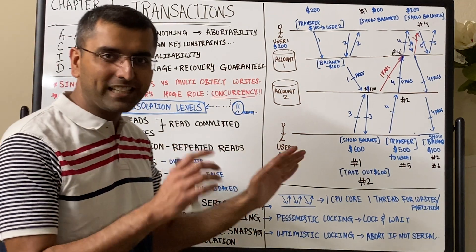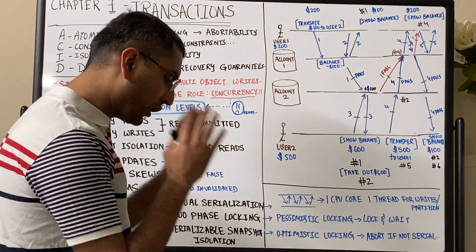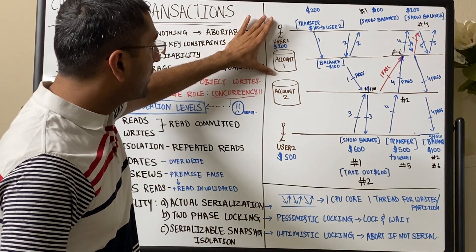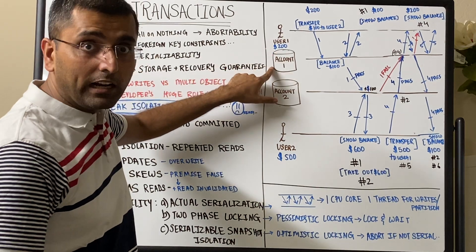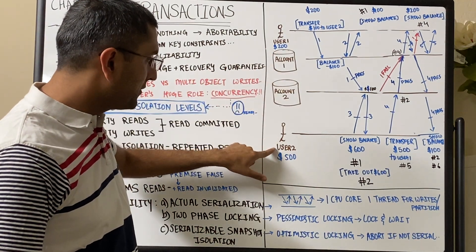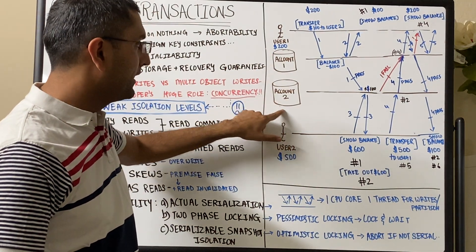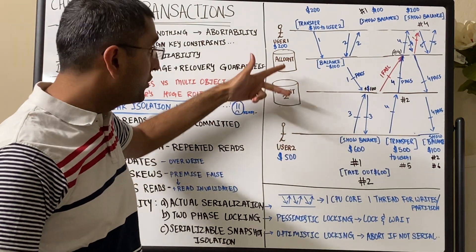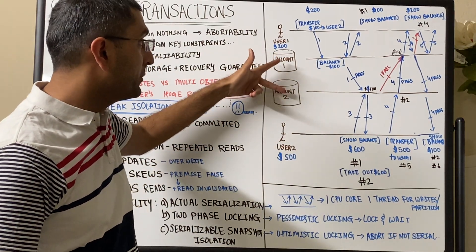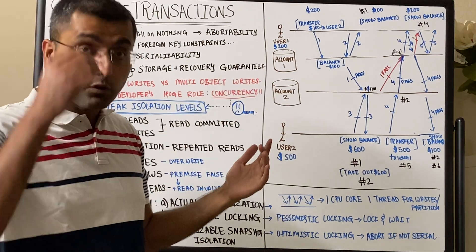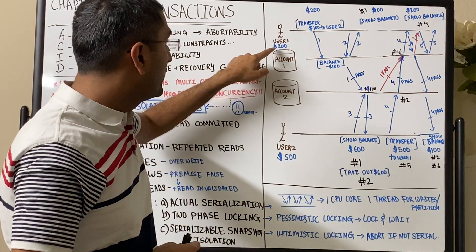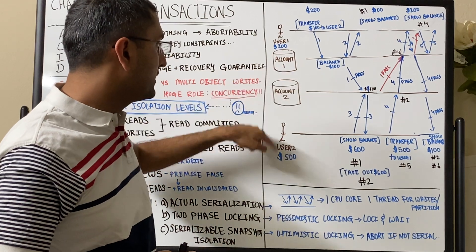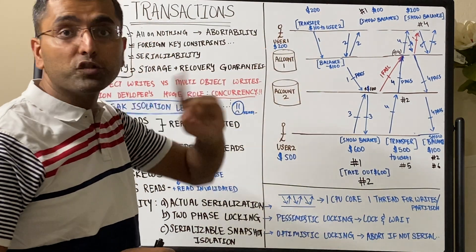Let's take a concrete example. Let's say there's a user who has $200 in their account and a second user who has $500 in their account, on two different partitions — two different data instances on two different machines, each on different partitions.